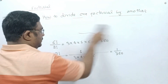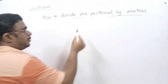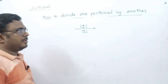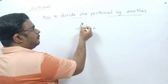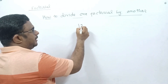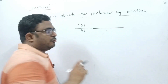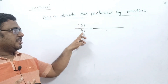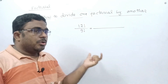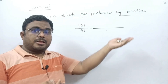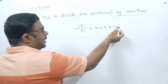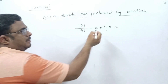Let us see some more examples. Suppose I give you 12!/9!. You cannot simply cancel by 3 to get 4!/3!— that is wrong. Apply the correct process: identify the smaller number, which is 9, and the larger, which is 12. Write down all natural numbers just greater than 9 up to 12: that is 10, 11, 12. Multiply them: 10 × 11 × 12 = 1320.